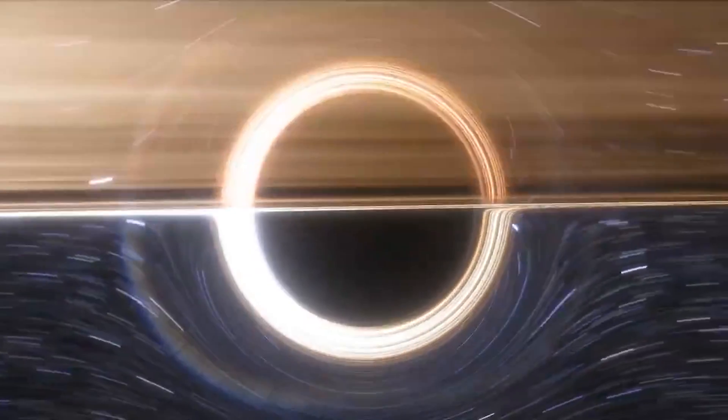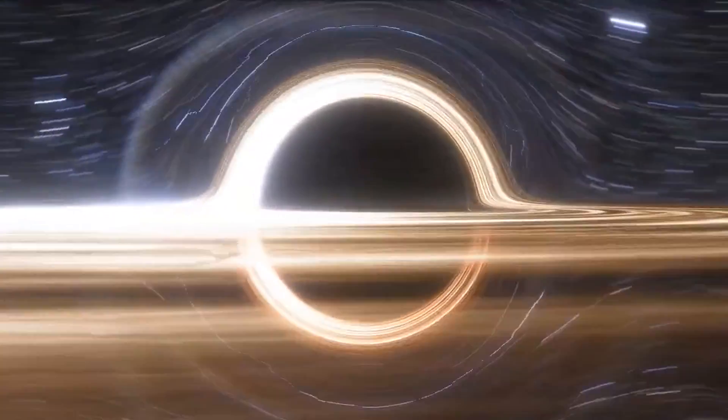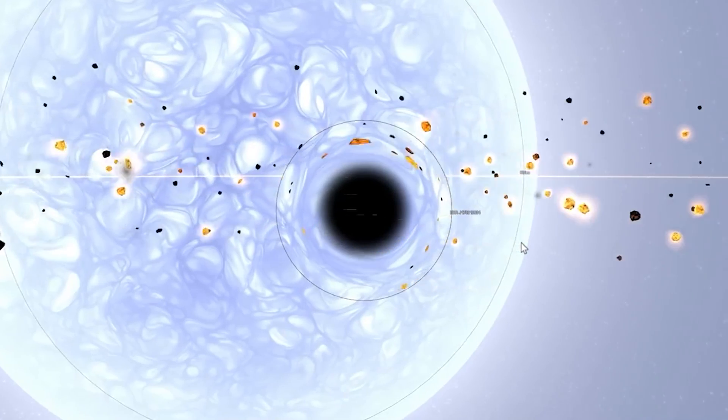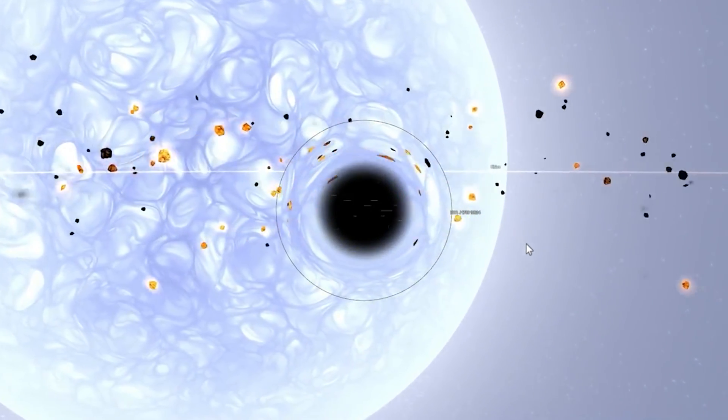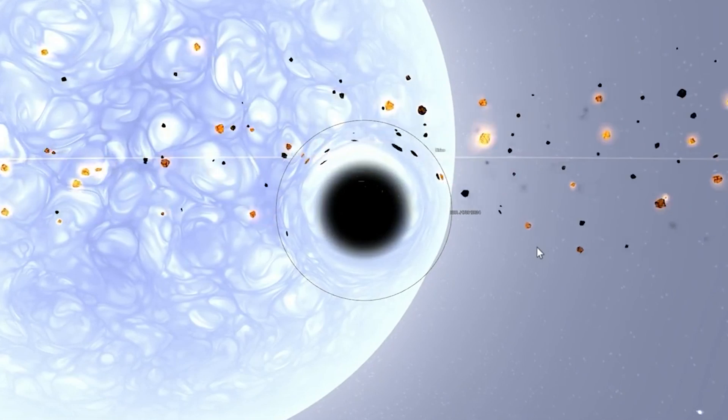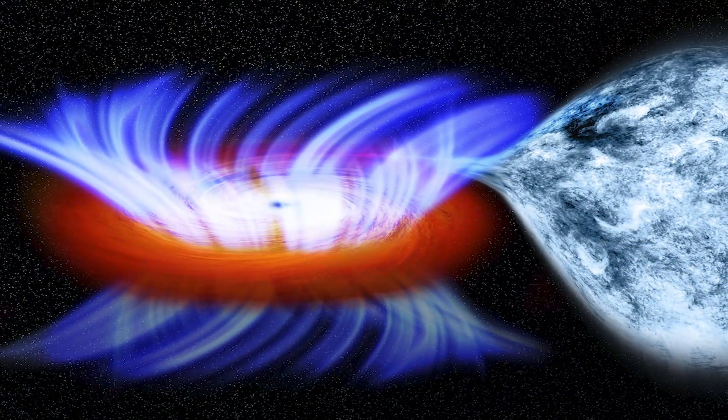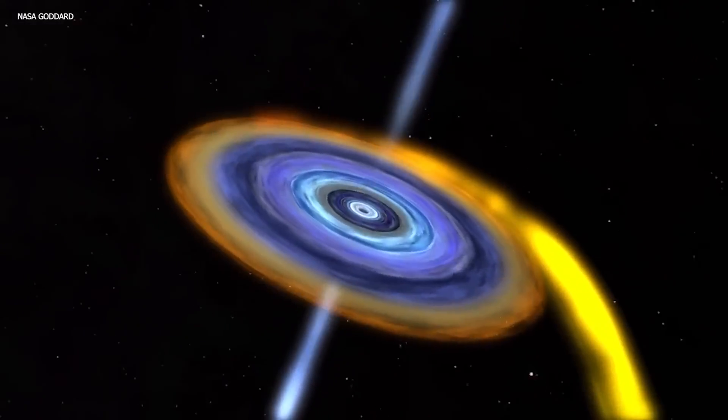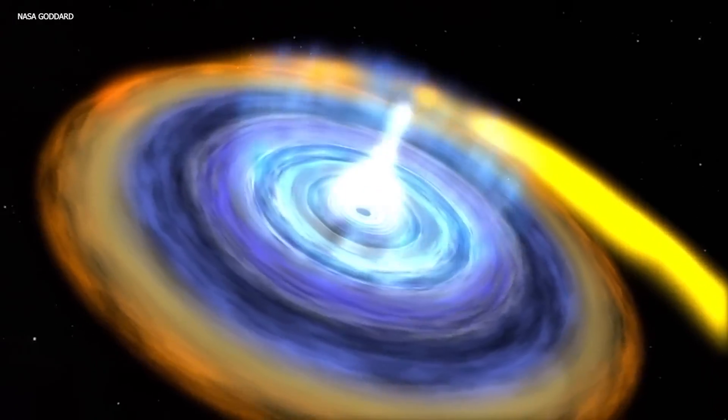It's possible that the tiniest black hole found so far has a mass less than three times that of our sun. This would place the black hole IGR J17091-3624 officially very close to the theoretical minimum limit required for stability. Despite its small size, this black hole appears to be quite dangerous.